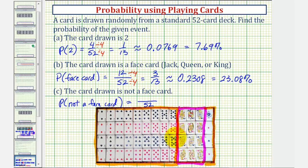Well, if there are 52 cards and 12 of them are face cards, 52 minus 12 leaves 40 non-face cards. So the probability of not a face card would be 40 over 52.